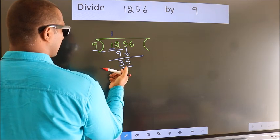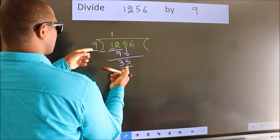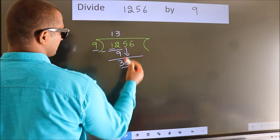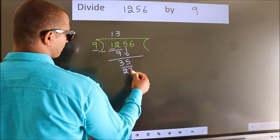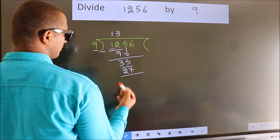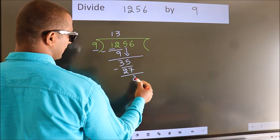A number close to 35 in the 9 table is 9 threes, 27. Now we subtract. We get 8.